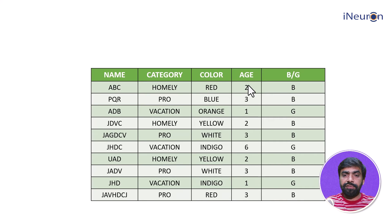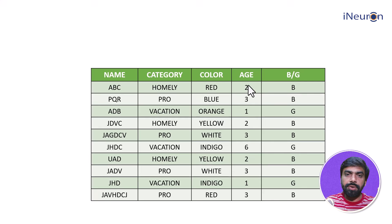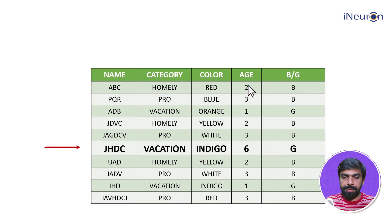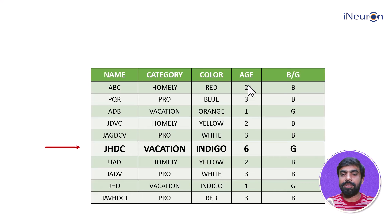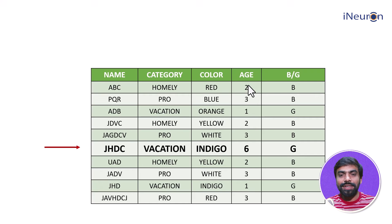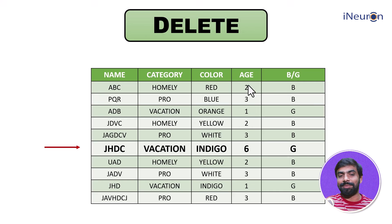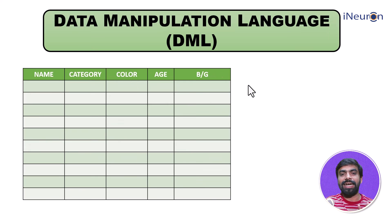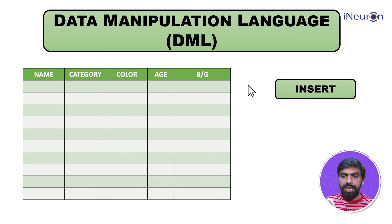The third command is DELETE. If there are certain data points I don't want anymore, I can remove them from the database. For example, I might want to get rid of a particular clothing item because it's almost six years old and was gifted — the time has come to remove it. I can use the DELETE command to remove it from the database completely.